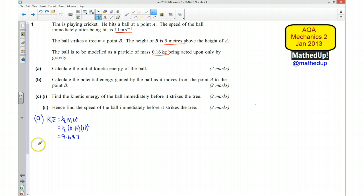Part B says calculate the potential energy gained by the ball as it moves from point A to point B. So my potential energy, the formula is going to be mgh. Mass times gravity times by the height. So my mass, again, is 0.16. Gravity we're going to take to be 9.8.